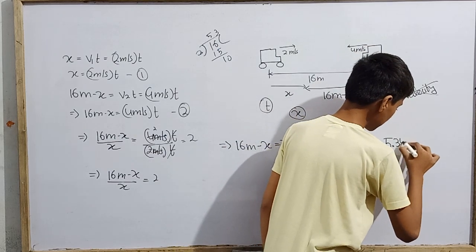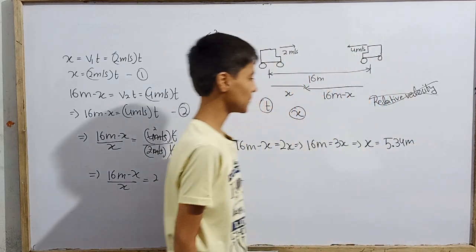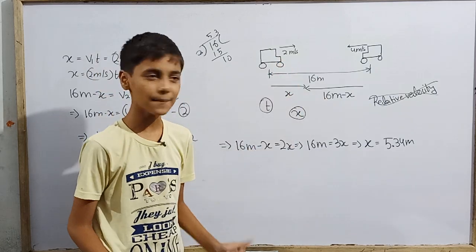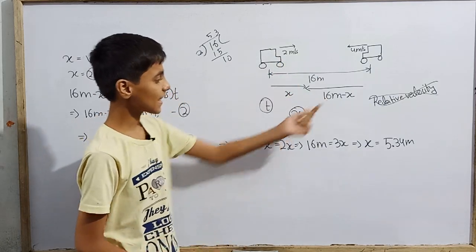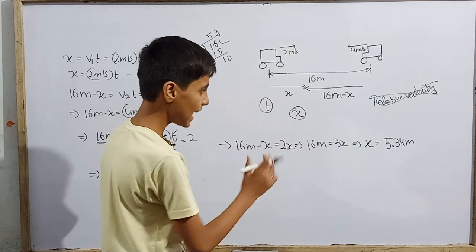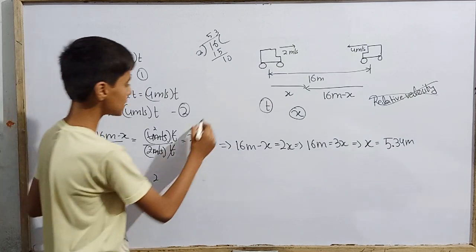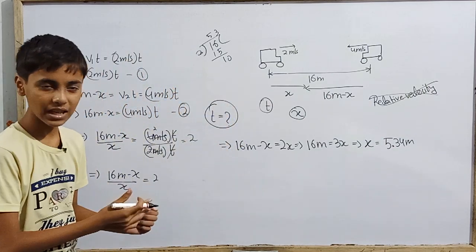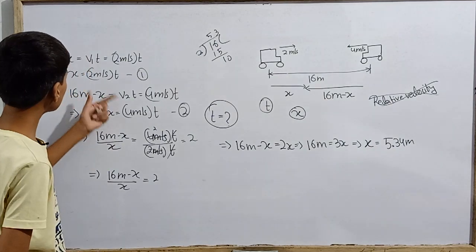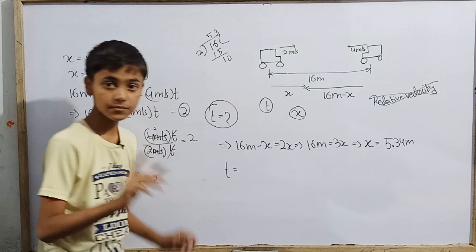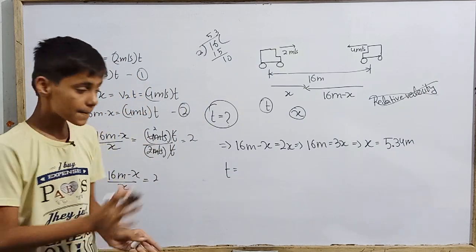So the first car travels 5.34 meters in time T, and the second car travels 16 meter minus this value of x. We don't need to see all that - we need to know exactly what time these two cars collide. So if we want to take T's value directly from the first equation, you can also use the second equation.